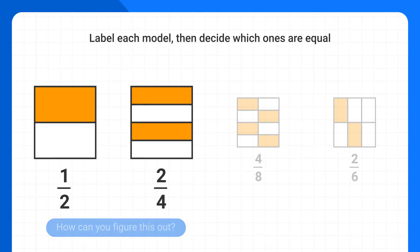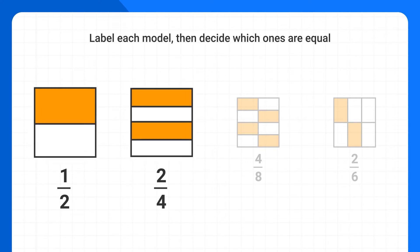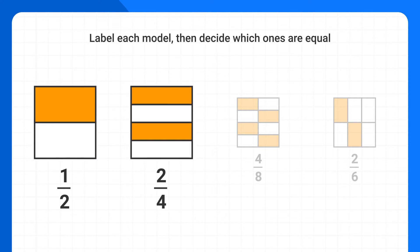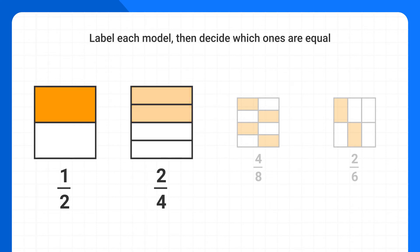In your head, you have to imagine moving the shaded pieces of each shape around. For example, if we take this shaded piece and move it up, you can see the total amount shaded in this shape is the same as in this shape. So these two models are equal, even though they might look different at first.